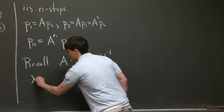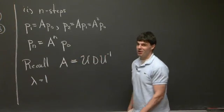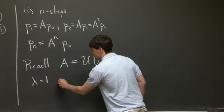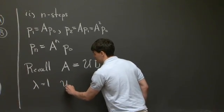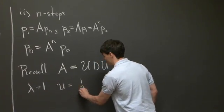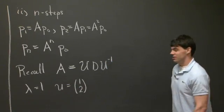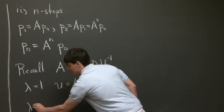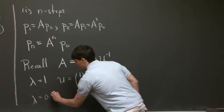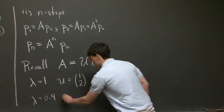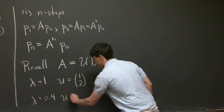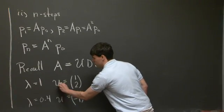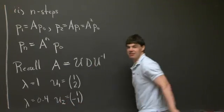So because it's a Markov matrix, we always have an eigenvalue, which is 1. And in this case, we have an eigenvector U, which is 1 and 2. In addition, the second eigenvalue is 0.4, and the eigenvector corresponding to this one is 1 minus 1. And I'll just call these u1 and u2, like that.